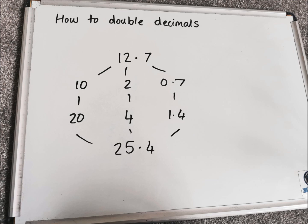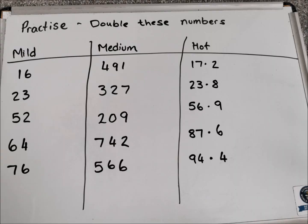Awesome, guys — that was really fast, so please slow it down and take your time. Pause the video if you need extra thinking time. Remember, this is just one strategy for doubling; there are lots of others. Here's a little practice for you: mild keeps to two-digit numbers, medium takes it to three-digit, and hot does the decimal examples. Pause the video and see if you can double these numbers using the partitioning strategy.